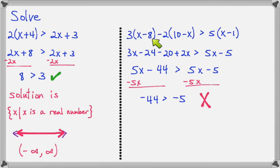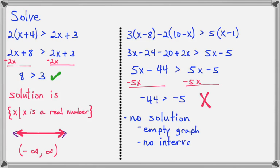So there's no solution. And that means the graph would be empty. And if the graph is empty, there's no interval. And in set notation, we would have this empty set symbol. The zero with a line through it stands for empty set. And it just means that there is no solution.